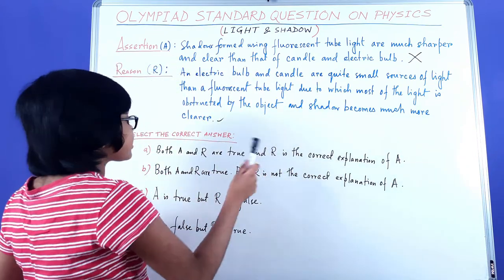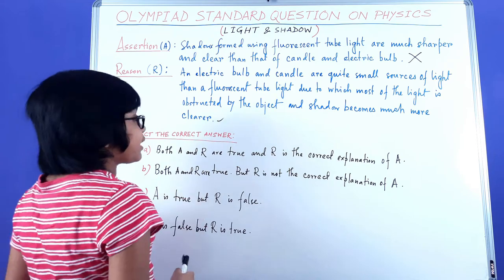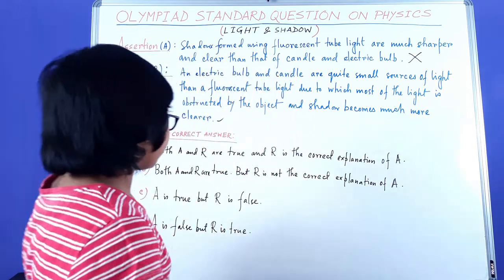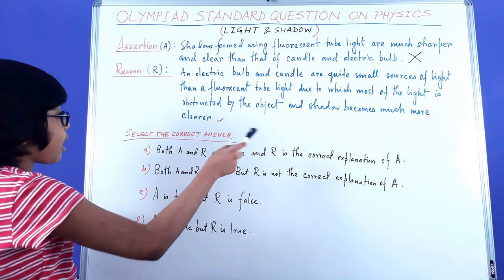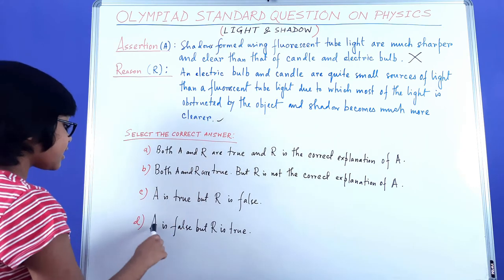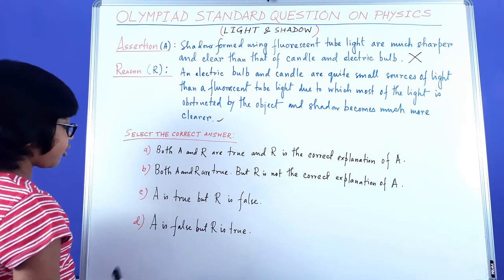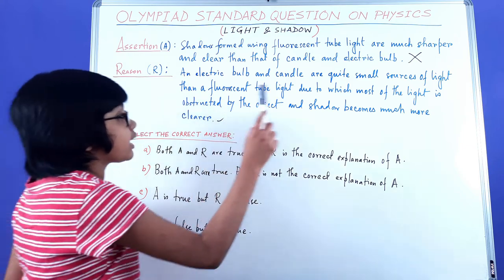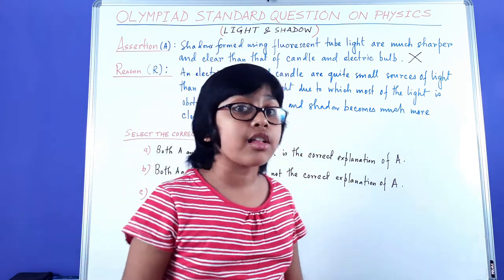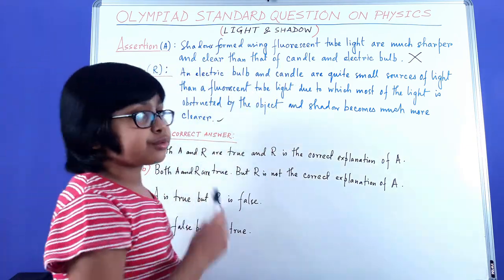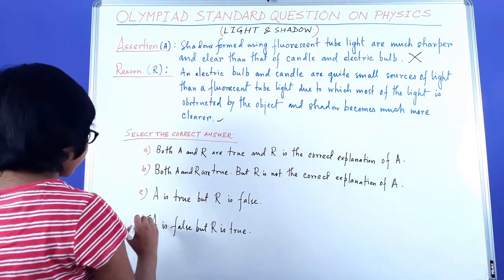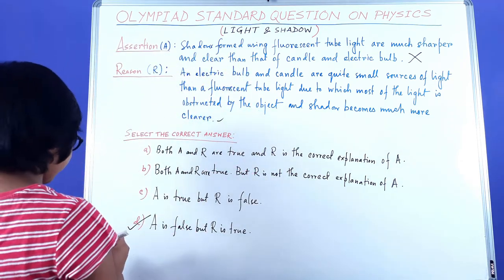From the moment I knew the assertion was wrong, I could immediately eliminate options A and B. And once I confirmed the reason was correct, I know that option D is correct — that A is false and R is true. So we tick option D as our correct answer.